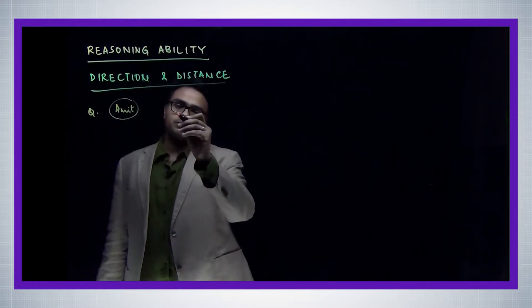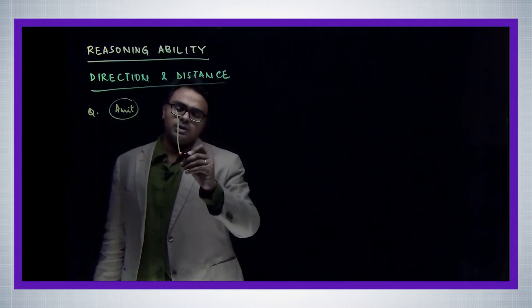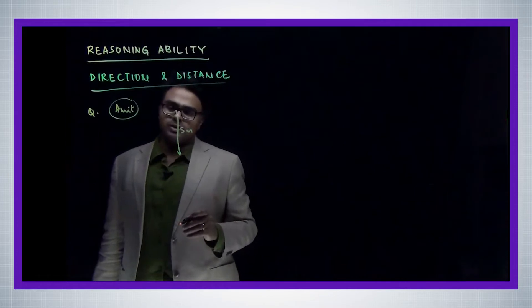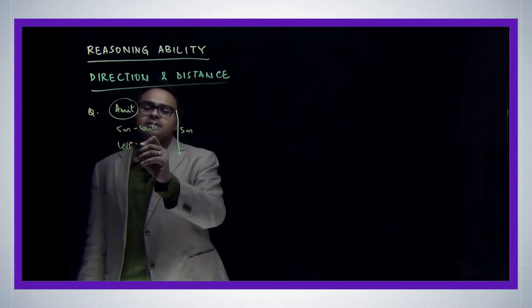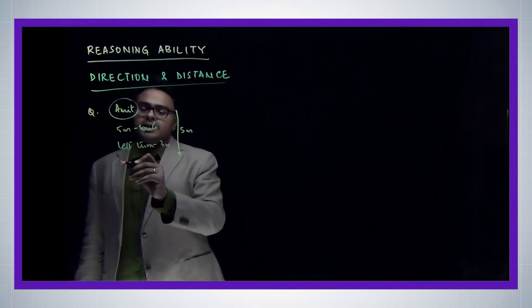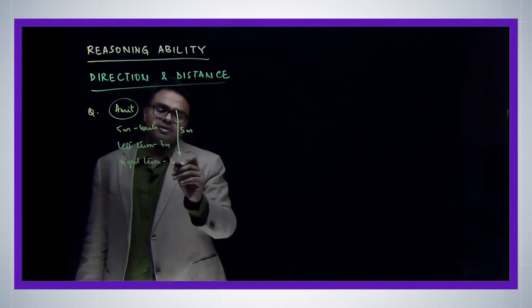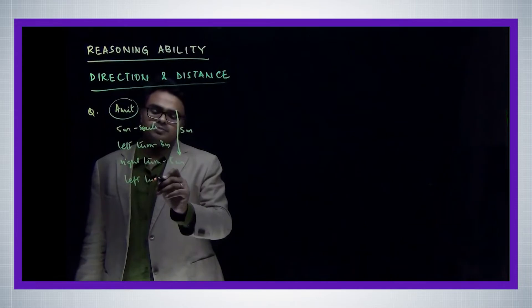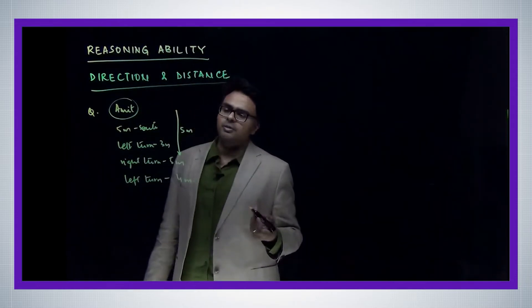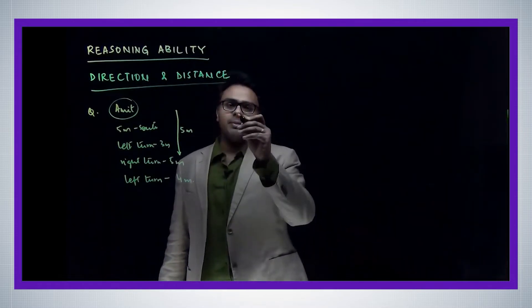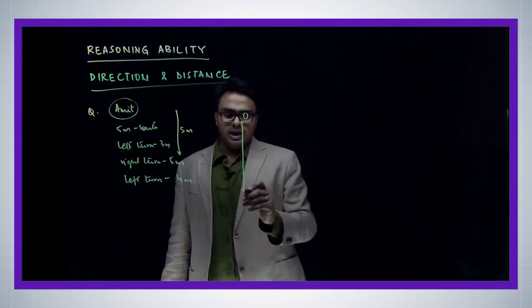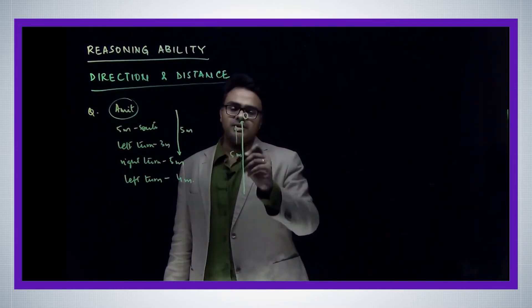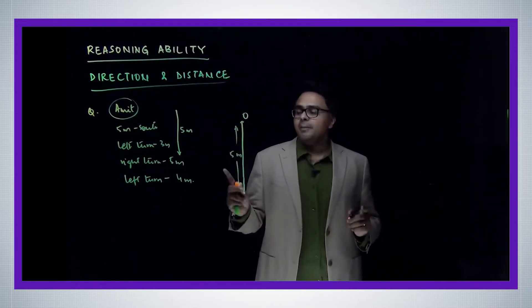Amit starts walking towards south from his original position. Amit walks five meters towards south. Then the question says: Amit walks five meters towards south, then takes a left turn and goes three meters, then takes a right turn, goes five meters, and then again takes a left turn and goes four meters. Find the distance from the original point. So let's draw this. Amit starts here at point O and goes five meters towards south.